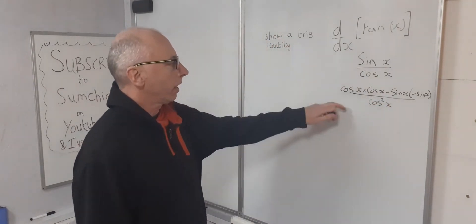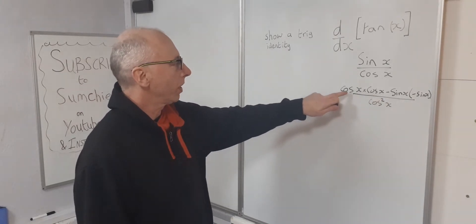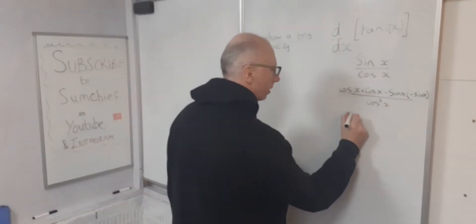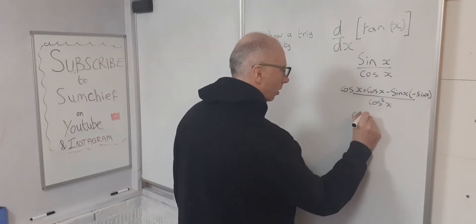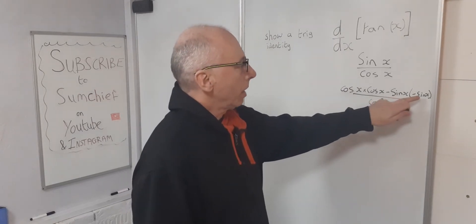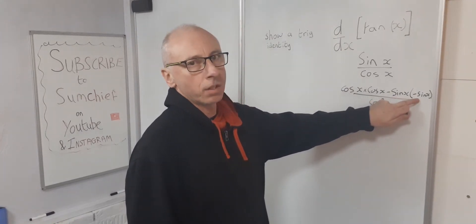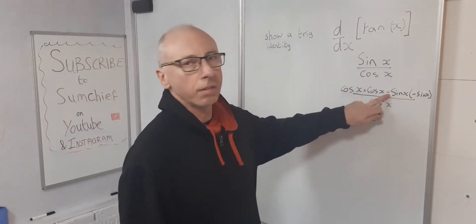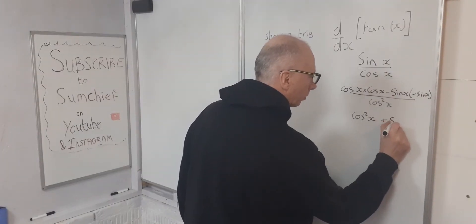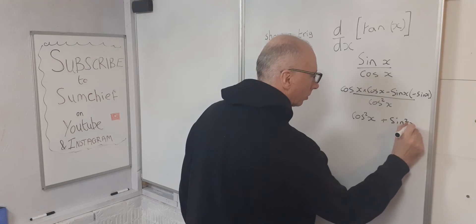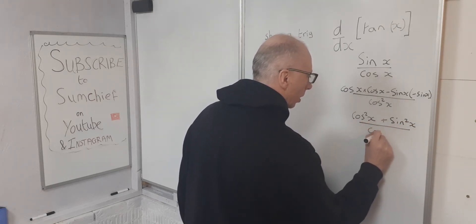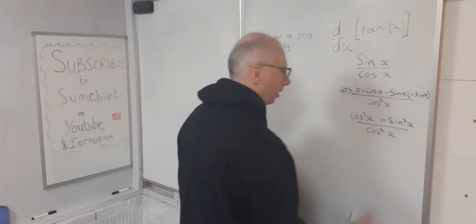Let's simplify this out. So cosine of x times cosine of x gives cosine squared x. Sine of x times minus sine of x is minus sine squared x, but the minus sign here as well makes it a plus. And all divided by cosine squared of x.